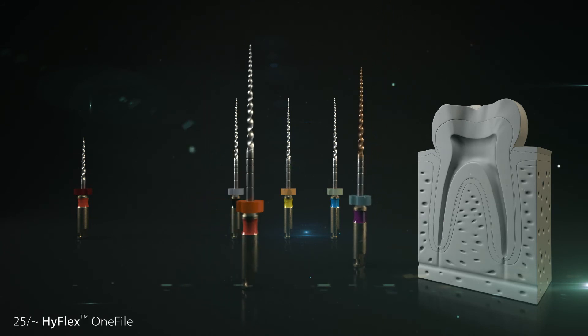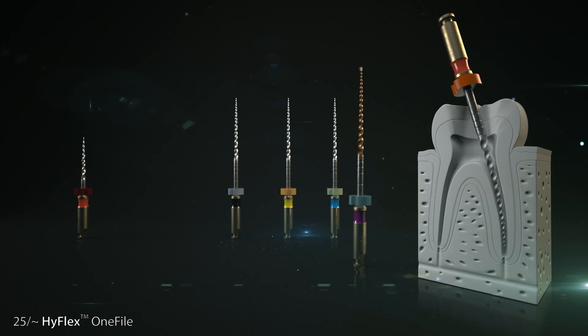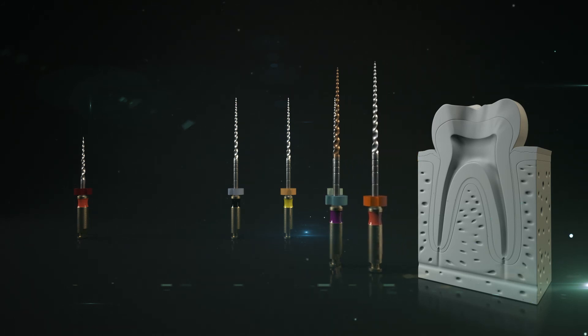Step 2: The HyFlex EDM1 file is used for the final preparation in the middle and apical areas of the root canal. Here again, the dentist uses the file up to its working length with cautious up and down touching movements. Regular rinsing during the treatment helps to remove the dentin and generally enhances the ability of the files to glide along the canal.